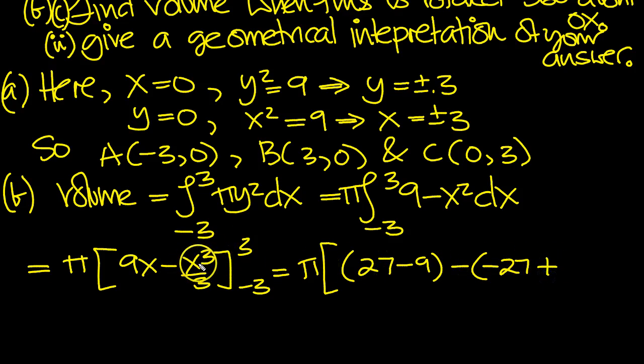Close bracket. Very easy to make a mistake there. So we end up with π then: 18 minus, and this is -18, here, with the minuses plus 18.